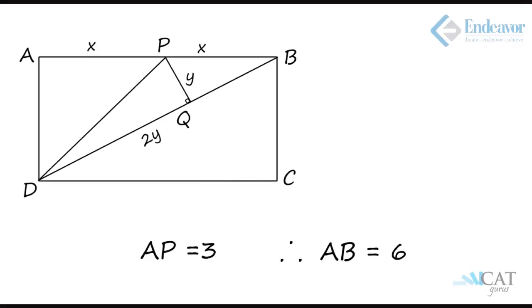So if AP is 3, the entire side AB of the rectangle will be 6. With AD as 4 and AB as 6, the area of the rectangle is 4 into 6, that is 24 square centimeters.